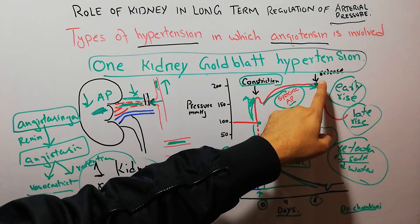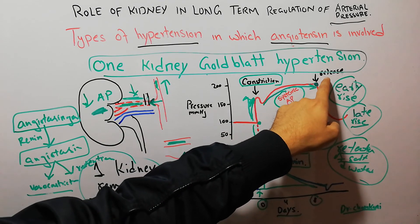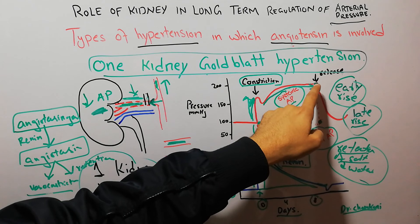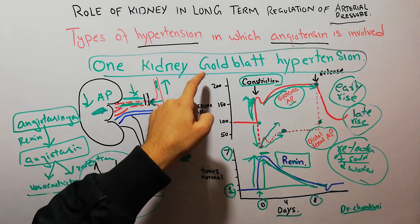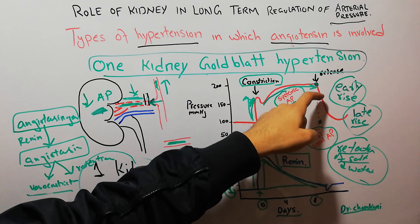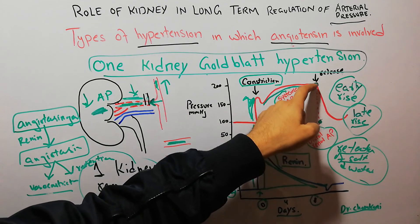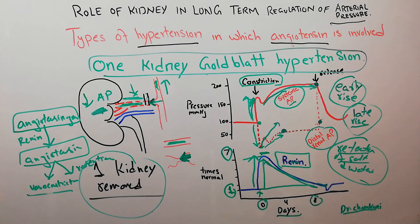If the constriction at this point is released, the Goldblatt hypertension will go away and the systemic arterial pressure will fall down again. That's all about one kidney Goldblatt hypertension.